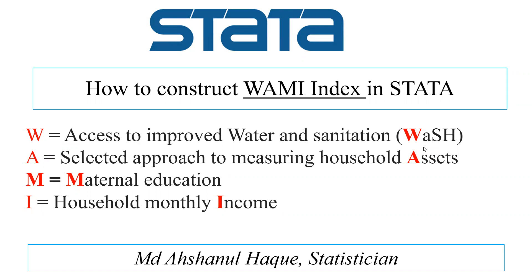Assalamu alaikum and welcome to a new presentation on WAMI index calculation. Today I would like to discuss how to construct the WAMI index. W means water and sanitation — specifically improved water and sanitation. A means selected approach to measuring household assets, where we use eight assets. The second A means maternal education, and I means household monthly income.